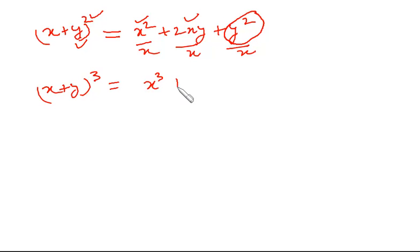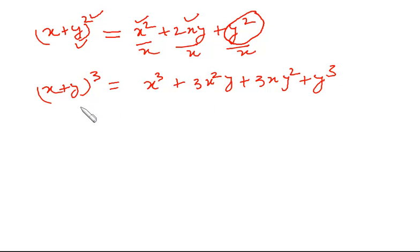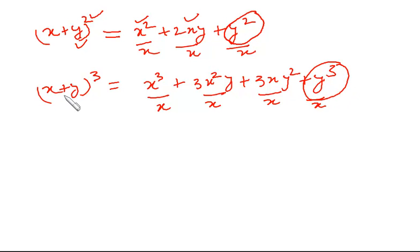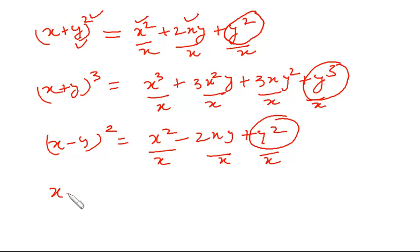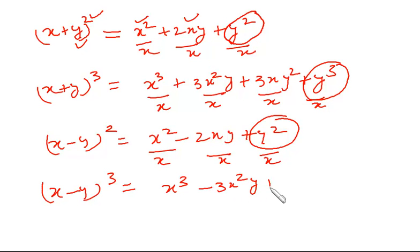Similarly, (x + y)³ expands to x³ + 3x²y + 3xy² + y³. If I divide (x + y)³ by x, the first three terms are all multiples of x and give no remainder — the remainder comes from y³ only. For (x − y)², the expansion is x² − 2xy + y², and dividing by x still gives remainder y². For (x − y)³, it expands to x³ − 3x²y + 3xy² − y³, and the remainder is from −y³.